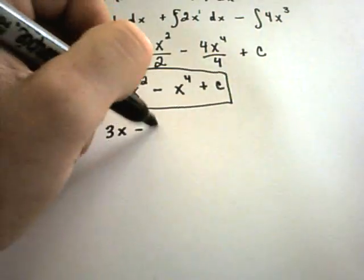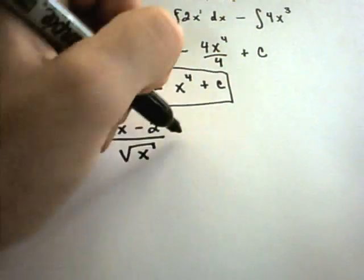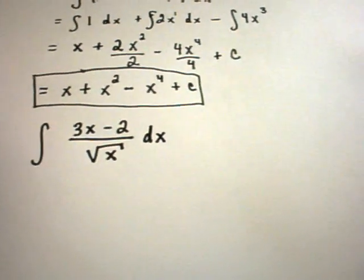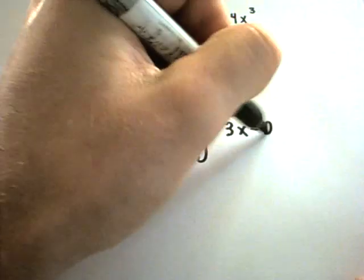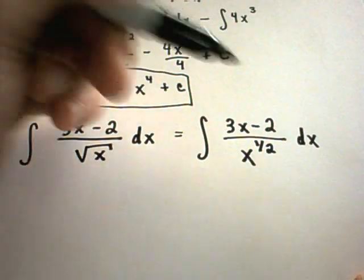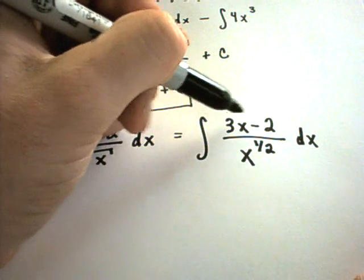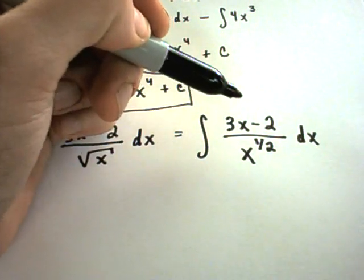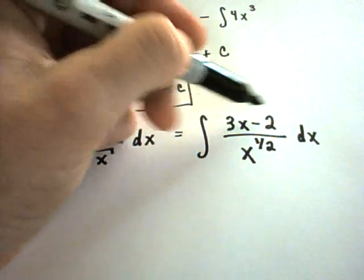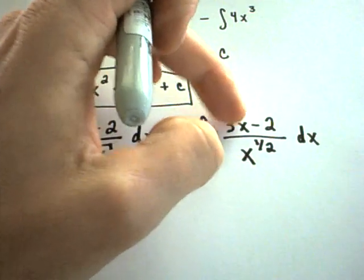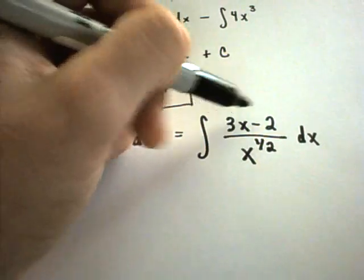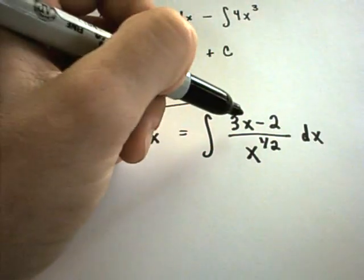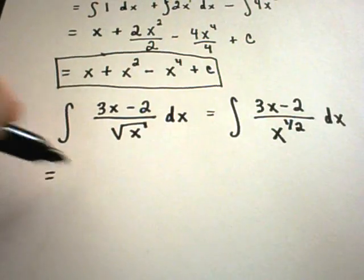Suppose we have (3x minus 2) divided by the square root of x. The first thing I usually do is the same as if I were going to take a derivative — rewrite radicals as powers. So the square root of x becomes x to the one half. You might think you can just take the anti-derivative of each piece, but just as with derivatives you wouldn't apply the quotient rule term by term, the same logic applies to anti-derivatives.